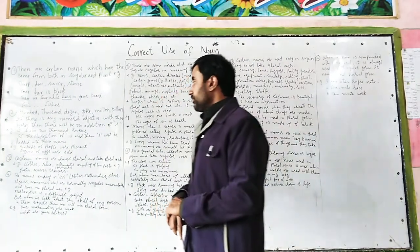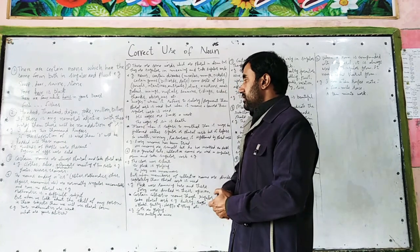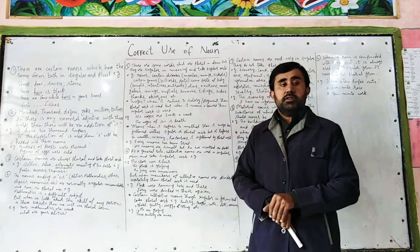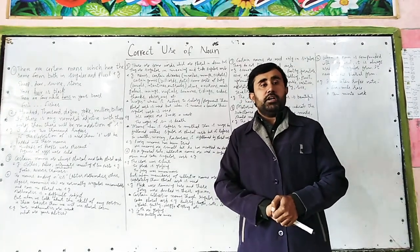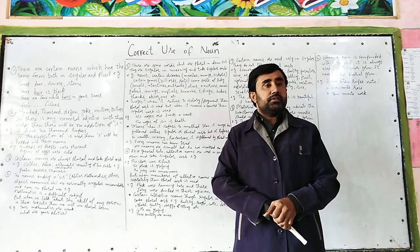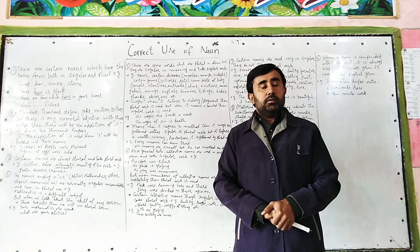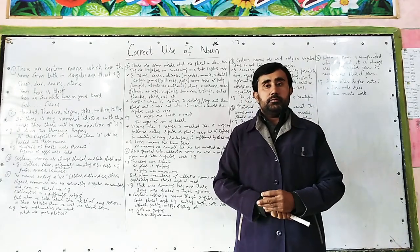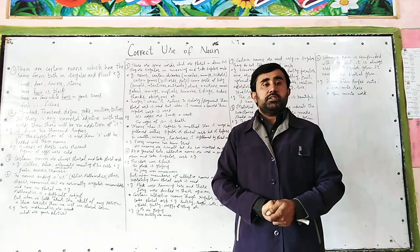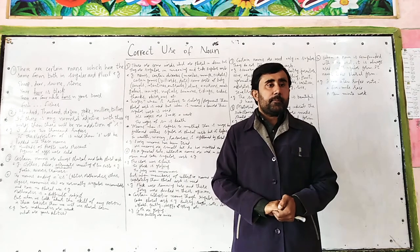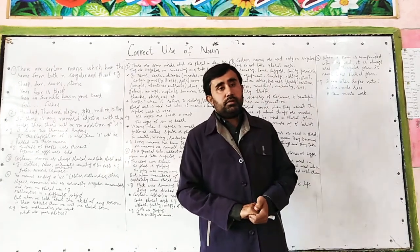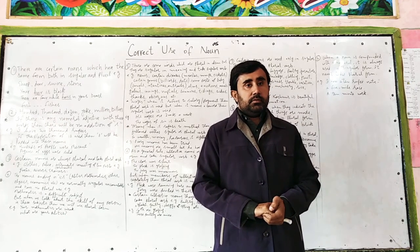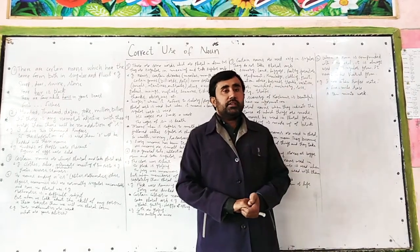The next rule is: certain nouns are always plural and take plural verbs. Some nouns are used only in plural form; they are not used in singular form. For example, 'clothes' and 'police.' 'My clothes are dirty,' 'Our clothes are beautiful.' In the same way, we use a plural verb with 'police': 'The police were chasing the thief,' 'The police have caught the thief.' We always use a plural verb with 'clothes' and 'police.'